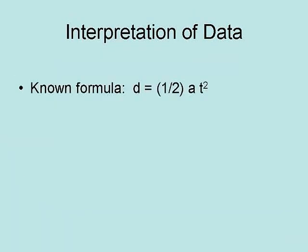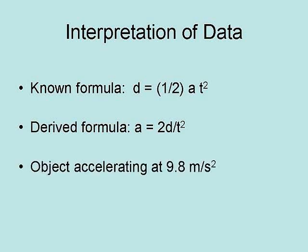To interpret the data, we go to a known theory, in this case the known formula for the distance of an accelerating object over time, and derive from that a formula for acceleration to calculate the object's acceleration at 9.8 meters per second, which is the acceleration due to Earth's gravity.